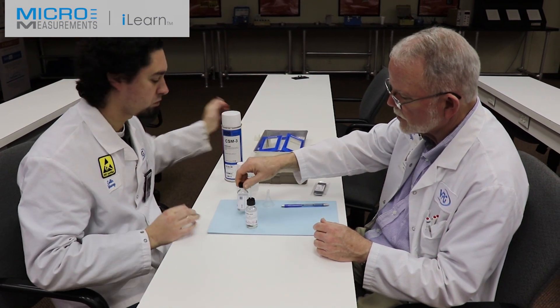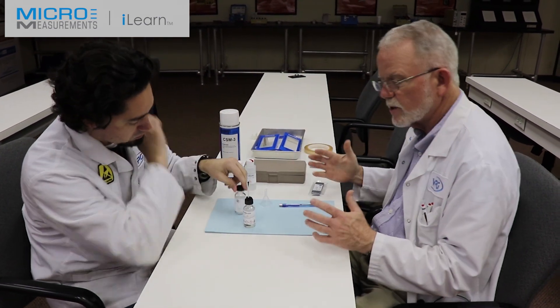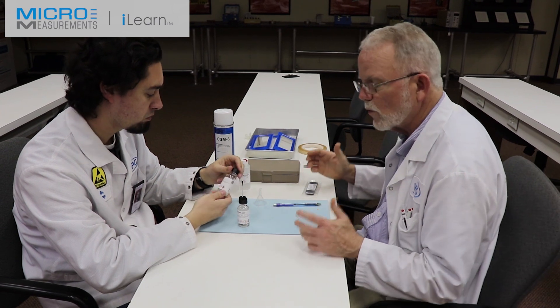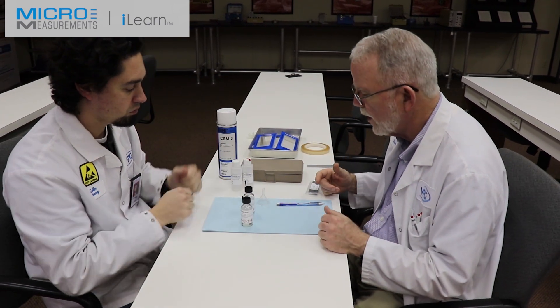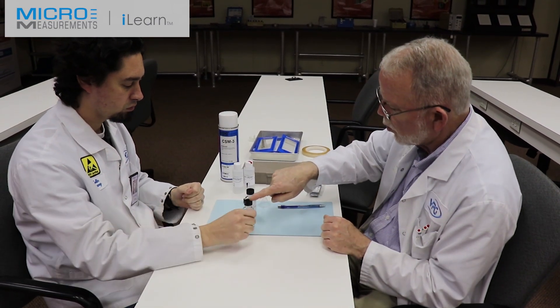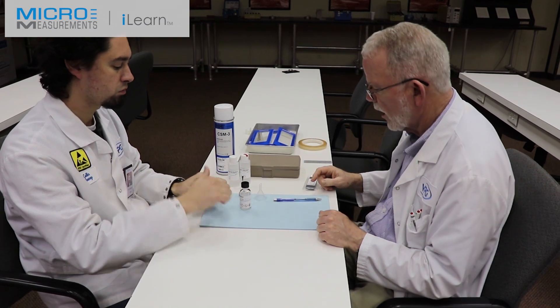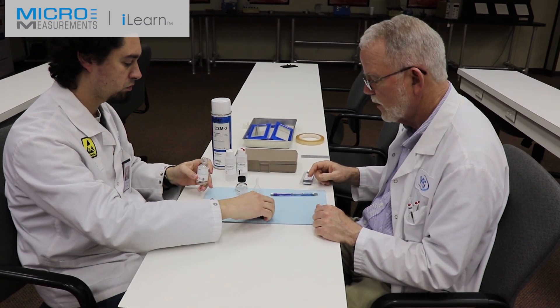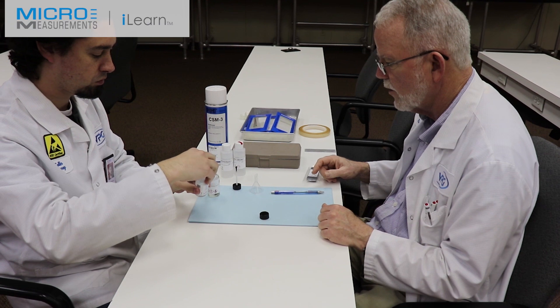Notice one of the bottles has date mixed on it. Since this has a two-week pot life we need to know when we mixed it so we need to know when to throw it away. So we're going to pour this material into this glass jar, remove the caps, and discard those.